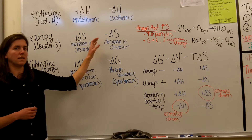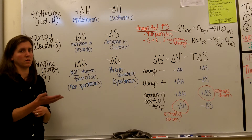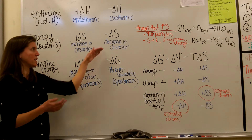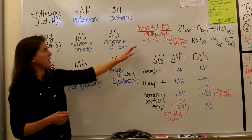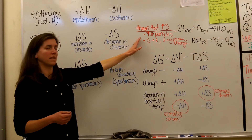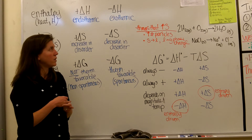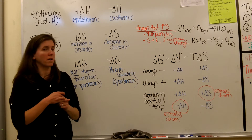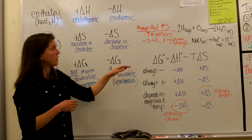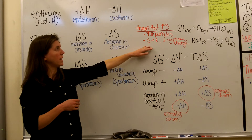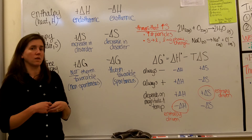A negative delta S means there's a decrease in disorder — at the end of your reaction there is less disorder, or more order, than when you started. Things that affect your S value: two main things to consider are the number of particles and the state of matter. If you increase the number of particles during a reaction, your entropy will increase. And if you do a phase change from solid to liquid or liquid to gas, you will also see an increase in entropy.